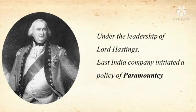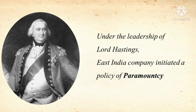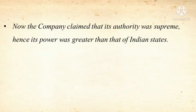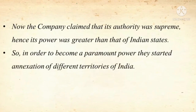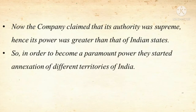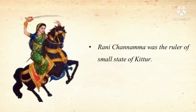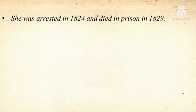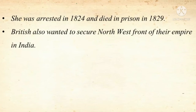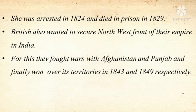Now the British, under the leadership of Lord Hastings, initiated a policy of Paramountcy. The company claimed that its authority was supreme, hence its power was greater than that of the Indian states. In order to become a paramount power, they started annexation of different territories of India. Rani Chennamma was the ruler of the small state of Kittur. When the British tried to annex Kittur, Rani Chennamma took up arms and led an anti-British resistance movement. She was arrested in 1824 and died in prison in 1829. The British also wanted to secure the North-West frontier of their empire in India. For this, they fought wars with Afghanistan and Punjab and finally won over those territories in 1843 and 1849 respectively.